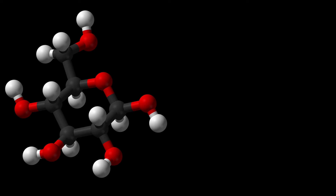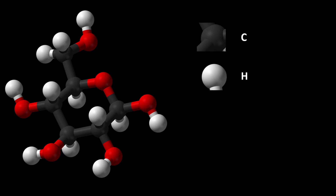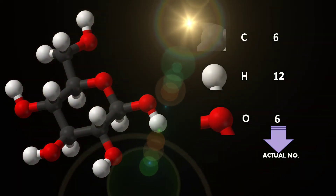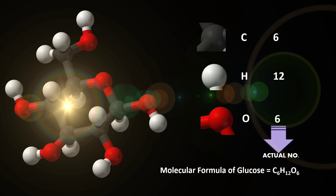This picture shows the 3D molecular structure of a glucose molecule. The black atoms represent carbon, the white atoms represent hydrogen, and the red atoms represent oxygen. If we do the counting properly, there are 6 carbon atoms, 12 hydrogen atoms, and 6 oxygen atoms in a glucose molecule. These 6, 12, and 6 are the actual number of atoms of each element, consistent with the molecular formula definition. Hence the molecular formula of glucose is C6H12O6.